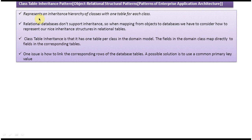The class table inheritance pattern represents an inheritance hierarchy of classes with one table for each class. You will see one example so that you will understand this.